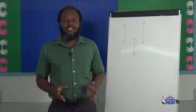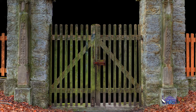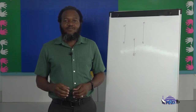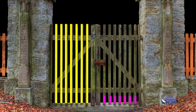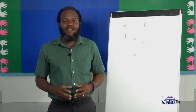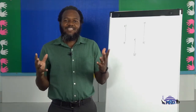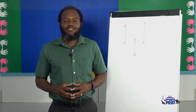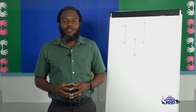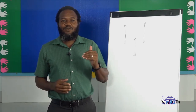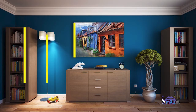From the picture of the gate, indicate the lines which are vertical. If you selected the lines that go from top to bottom or bottom to top, then you are absolutely correct.